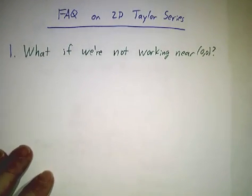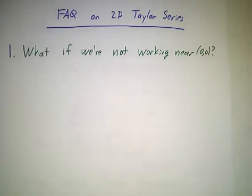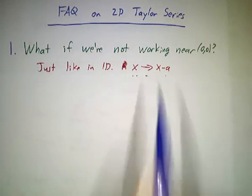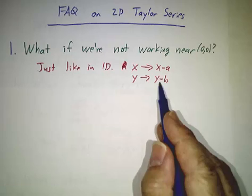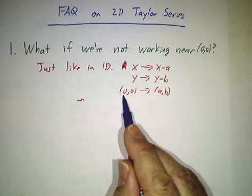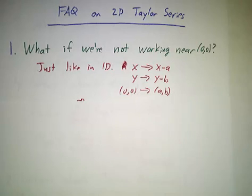So what's left? Well, what if you're not working around (0,0)? What if you're working around a point (a,b)? Well, in one dimension, that just gave you powers of x minus a instead of powers of x. Only now, we've also got powers of y minus b instead of powers of y, and instead of evaluating our derivatives at (0,0), we evaluate them at (a,b).